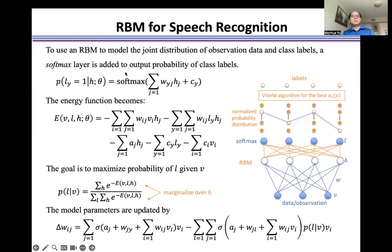To use RBM to model the joint distribution of the observation data and class labels, a softmax layer is added to output probability of class labels.